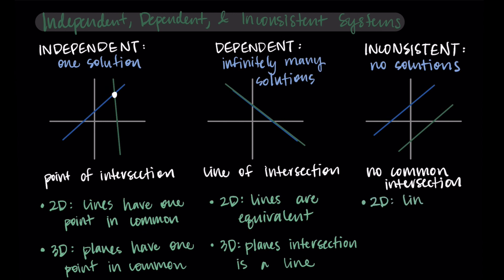As I mentioned, in 2D, this would mean that the lines are parallel. And in 3D, this would mean the planes don't have a common intersection point. So maybe two of the planes intersect in one location and two of the other planes intersect somewhere else, but they don't all have that one point in common. So there's no one solution that satisfies all of them.